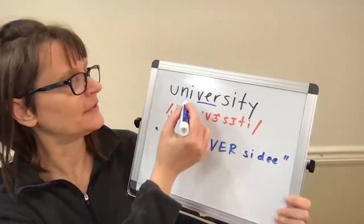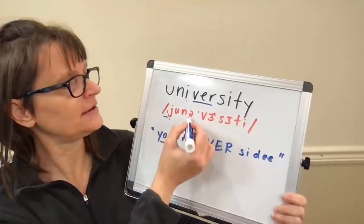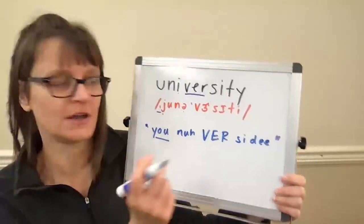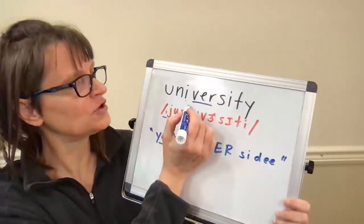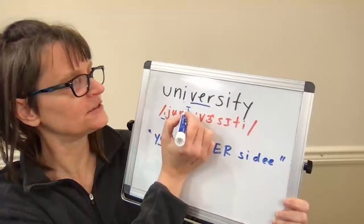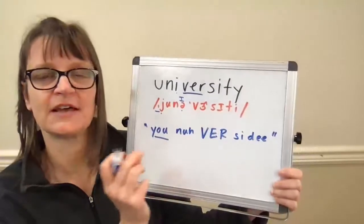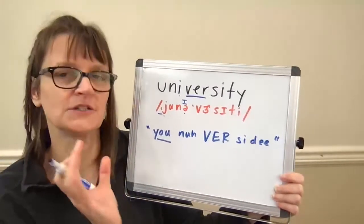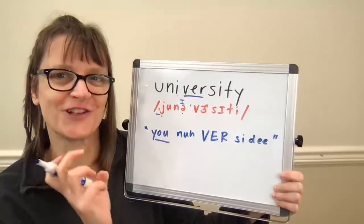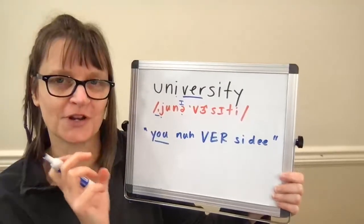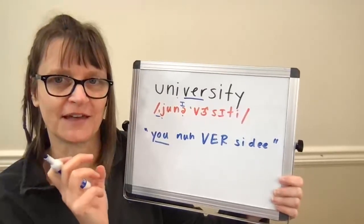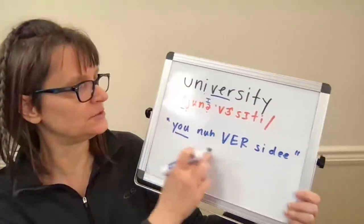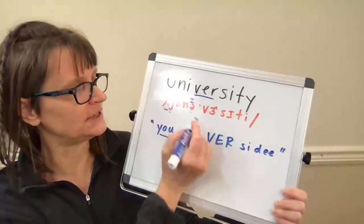The letter I is going to be a schwa — sounds like an U sound — or you may also hear it as an I sound: 'U-ni' or 'U-na.' It doesn't matter too much as long as you're very short and reduced on that second syllable. So 'U-na' or 'U-ni.'